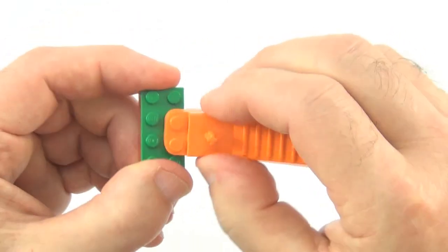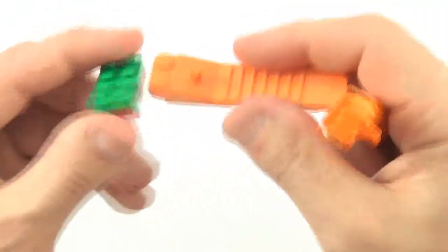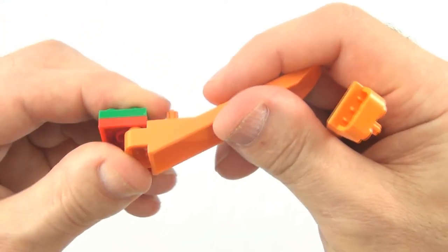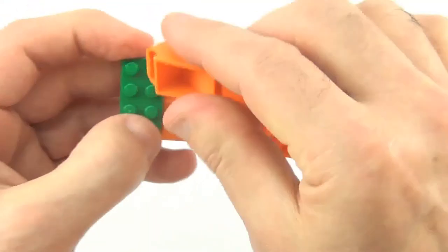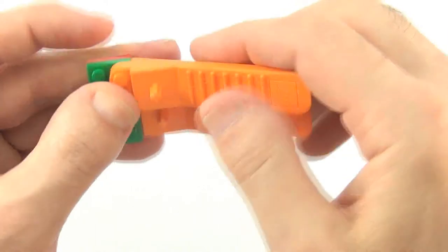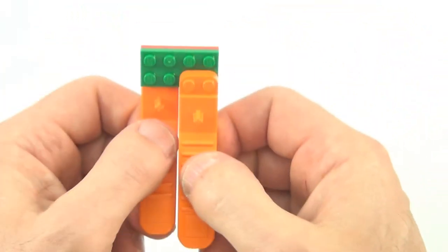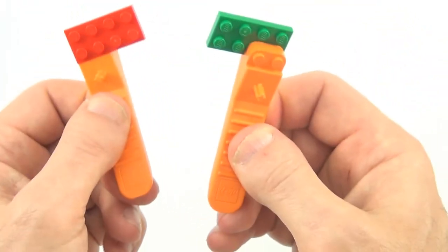This is where we can offset our brick separator, on the left hand side underneath, on the right hand side on top, then squeeze them together, and they come apart very easily.